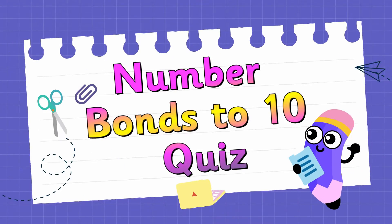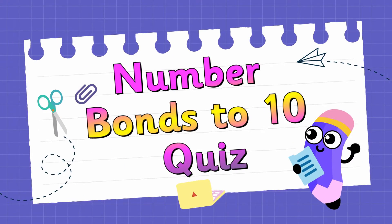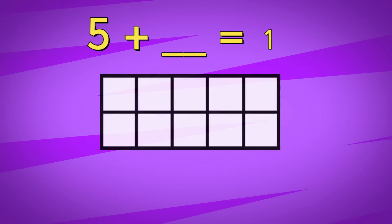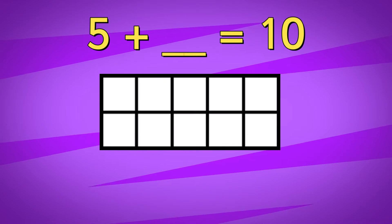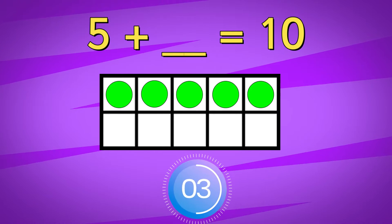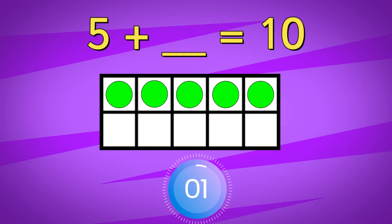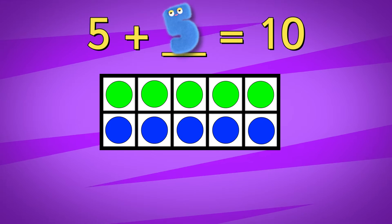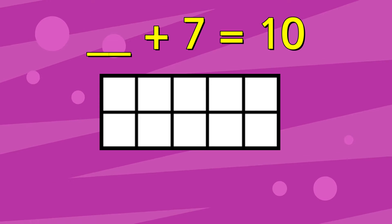Let's play a number bonds to 10 quiz. 5 add something equals 10. The answer is 5. Something add 7 equals 10.